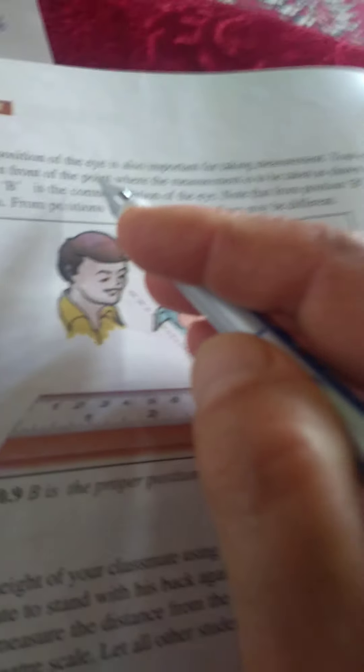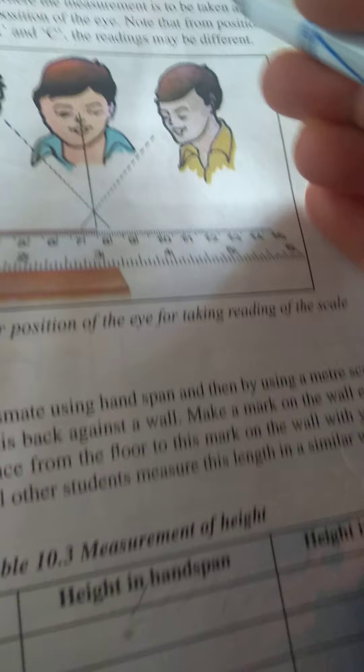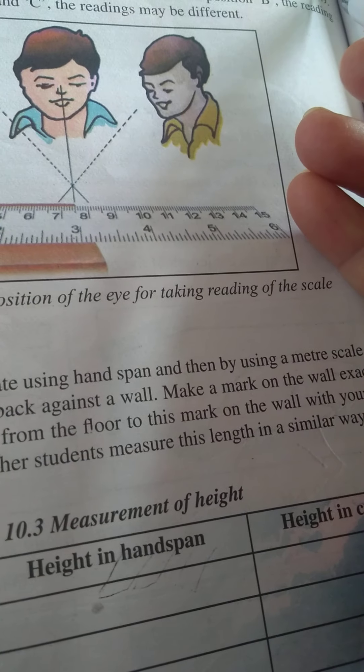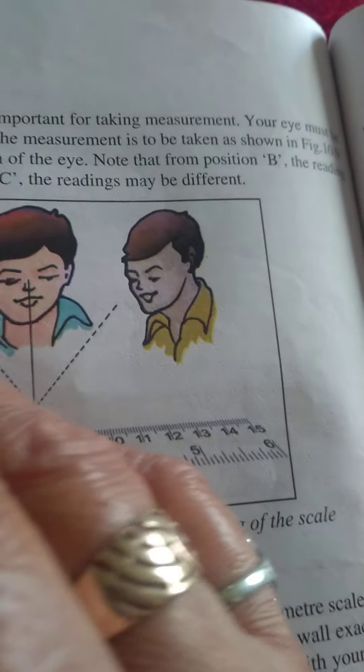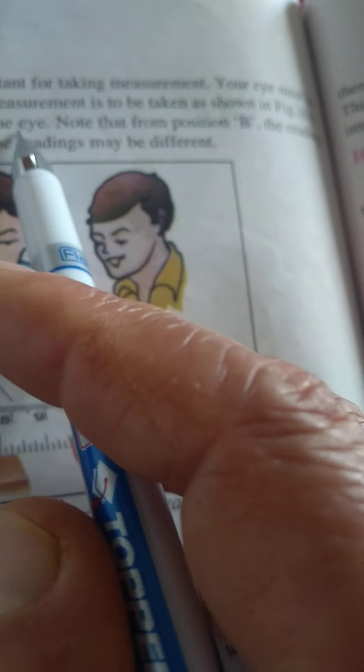The correct position of the eye is also important for taking measurements. Your eye must be exactly in front of the point where the measurement is to be taken as shown in figure 10.9. Position B is the correct position of the eye.